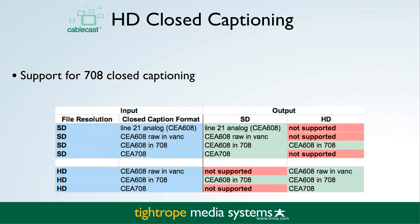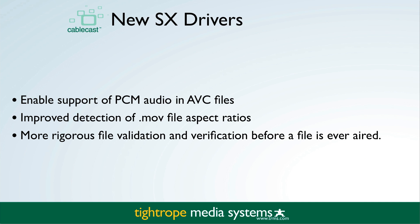Shown here is a chart of all the closed captioning options currently supported in Cablecast, including pass-through of closed captioning even when converting between SD and HD if you're using one of our HD servers. Cablecast 5.1 also ships with new drivers for the SX servers, enabling PCM audio support in H.264 files. We also have improved detection for MOV aspect ratios, so 4:3 and 16:9 files are more accurately detected in Cablecast 5.1.